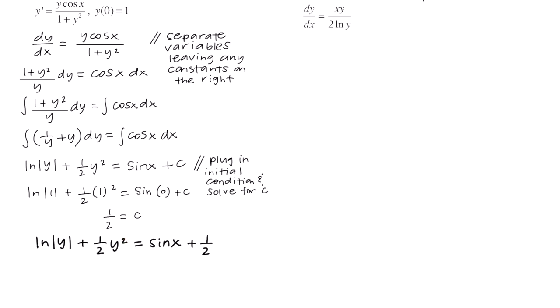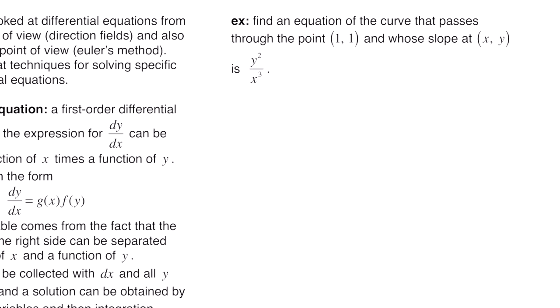If you can solve for y, you want to go ahead and do so. This next example says: find an equation of the curve that passes through the point (1, 1) and whose slope at (x, y) is y²/x³. Since the slope is y²/x³, we write dy/dx = y²/x³. We use the same process to separate the variables, moving y² down to the left and dx up to the right.